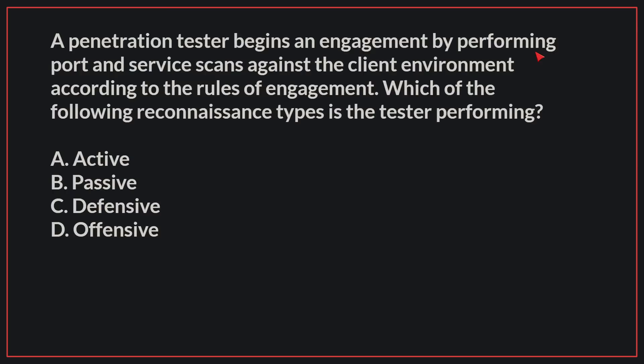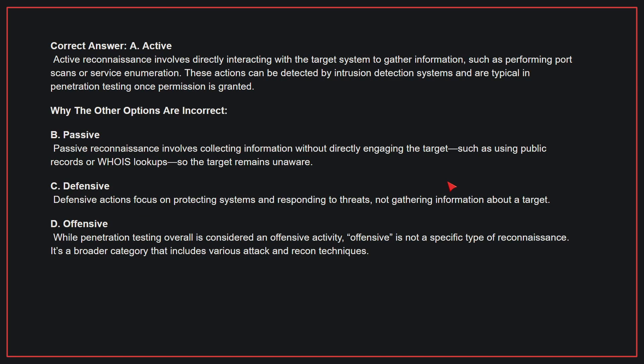A penetration tester begins an engagement by performing port and service scans against the client's environment according to the rules of engagement. Which of the following reconnaissance types is the tester performing? The correct answer is A: Active. Active reconnaissance involves directly interacting with the target system to gather information, such as performing port scans or service enumeration.